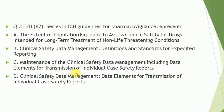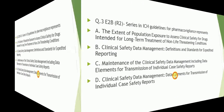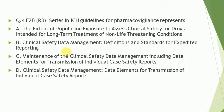including data elements for transmission of individual case safety reports. Question number 4: what does the E2B R3 series in ICH guideline for pharmacovigilance represent? The correct answer is: clinical safety data management — data elements for transmission of individual case safety